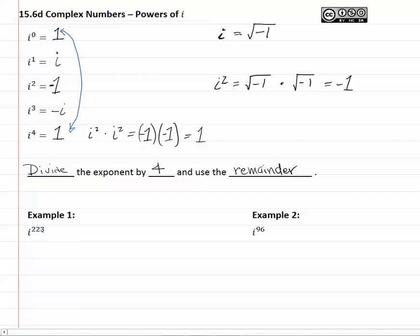In example 1, we have i to the 223rd, so we take the exponent 223 and divide it by 4. 5 times 4 is 20, with the remainder of 2, bring down the 3. 5 times 4 is 20 again, and we have a remainder of 3. So we write i to the third, and from the examples above, we know that i to the third is equal to negative i, and that is your answer.